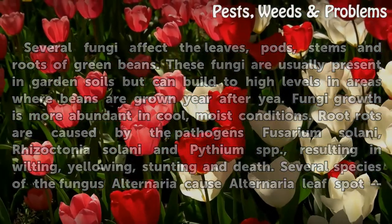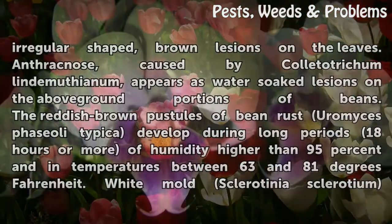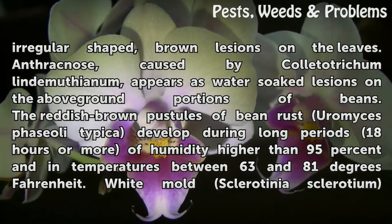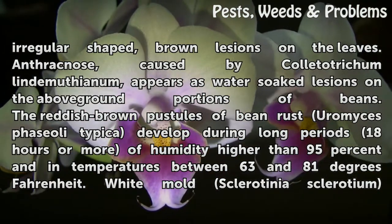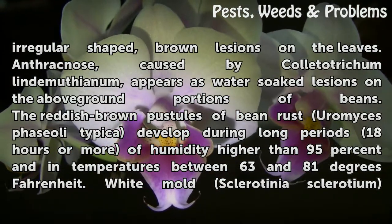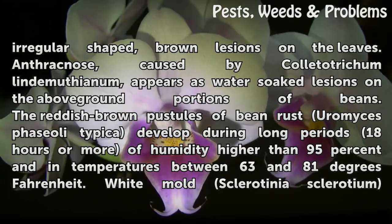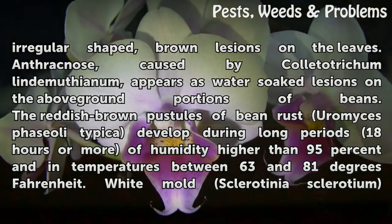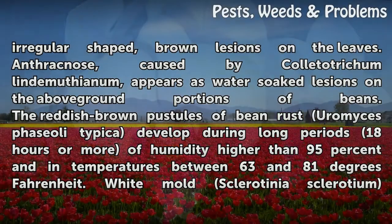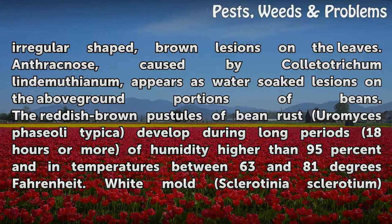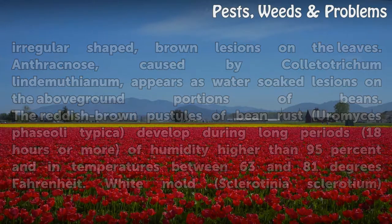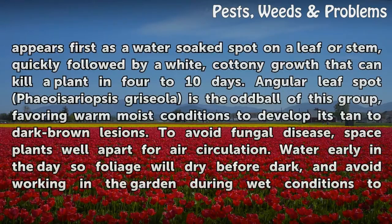Several species of the fungus Alternaria cause Alternaria leaf spot, with irregular-shaped brown lesions on the leaves. Anthracnose, caused by Colletotrichum lindemuthianum, appears as water-soaked lesions on the above-ground portions of beans. The reddish-brown pustules of bean rust, Uromyces phaseolicola, develop during long periods — 18 hours or more — of humidity higher than 95% and in temperatures between 63 and 81 degrees Fahrenheit.